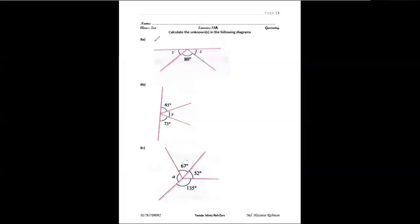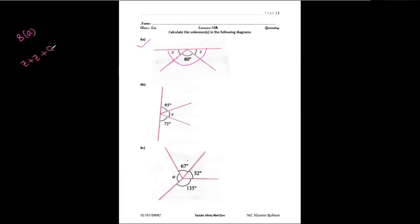For the first figure of 8a, we can see that 80 degrees is given as z. From this figure, we can say that these three angles will make 180 degrees. So we can write: z plus z plus 80 degrees will make 180 degrees.